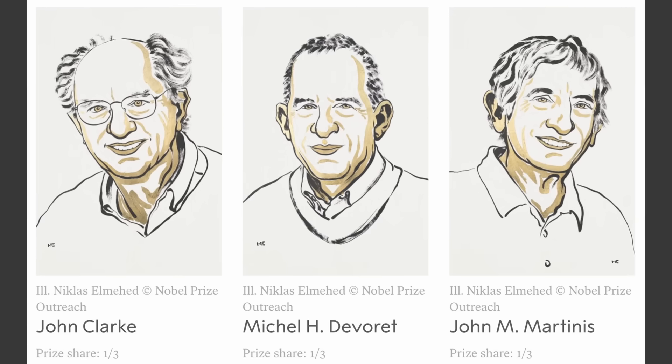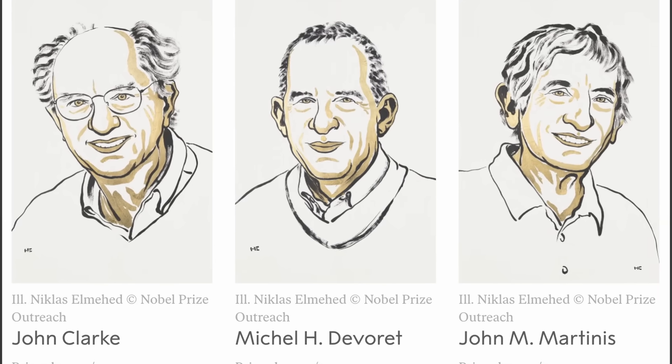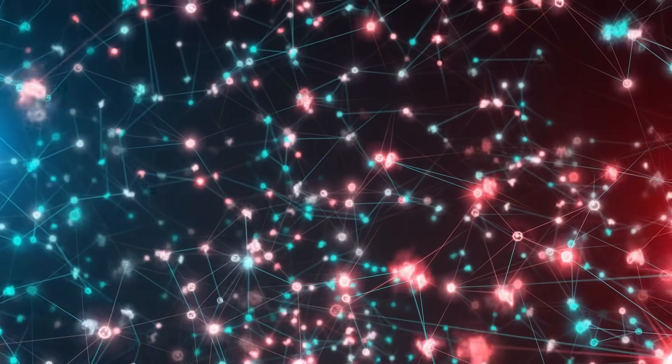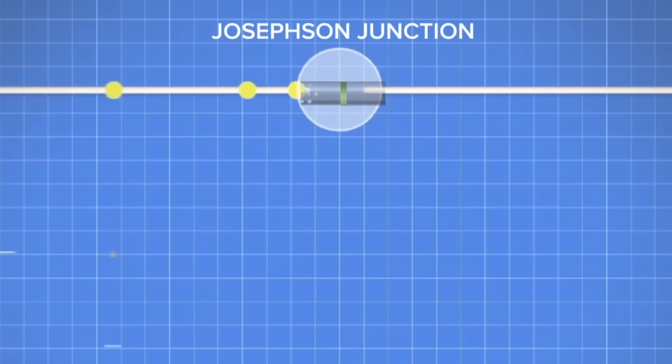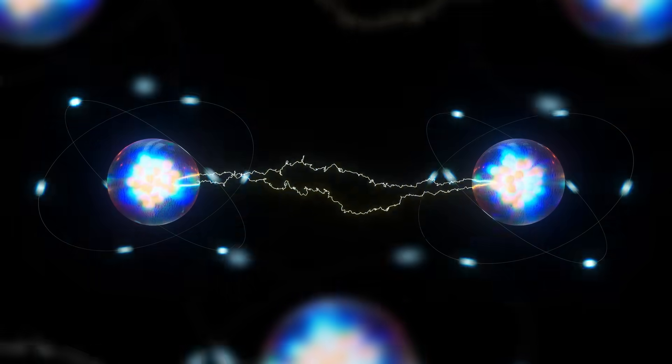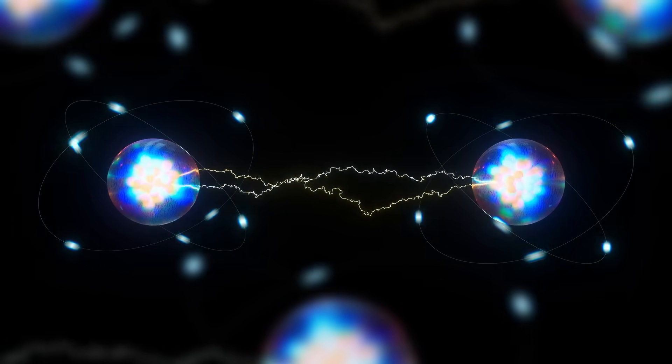What Clarke, Deverett, and Martinis proved is that this wave isn't a metaphor. It's measurable, controllable, and most importantly, quantum. By using Josephson Junctions, they created circuits that behave just like atoms, absorbing and emitting energy in discrete amounts.